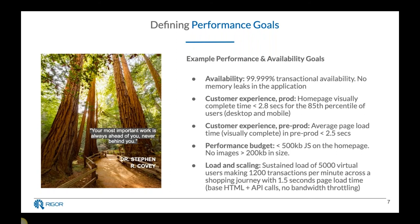As we look across the different classes of tools, we can define different goals and measure them using specific tools. For an availability goal — for example, five nines of transaction availability — we want to make sure the system is up, responsive, returns valid responses to transactional requests, and has no memory leaks. To measure that, we need to look at both synthetic tooling and APM tooling.